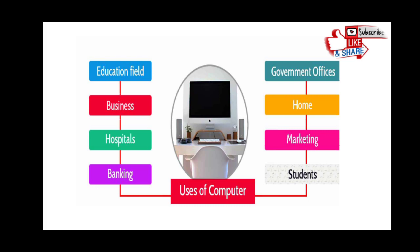Next is banking. In banking, ATM machines are used — money withdrawal happens through computerized ATM machines. Your money records are kept and accounts are maintained in the banking sector. In government offices, employee details and much more work is handled by computers. At railway stations, ticket booking, ticket cancellation, and records of who is travelling from one city to another are all managed through computers.